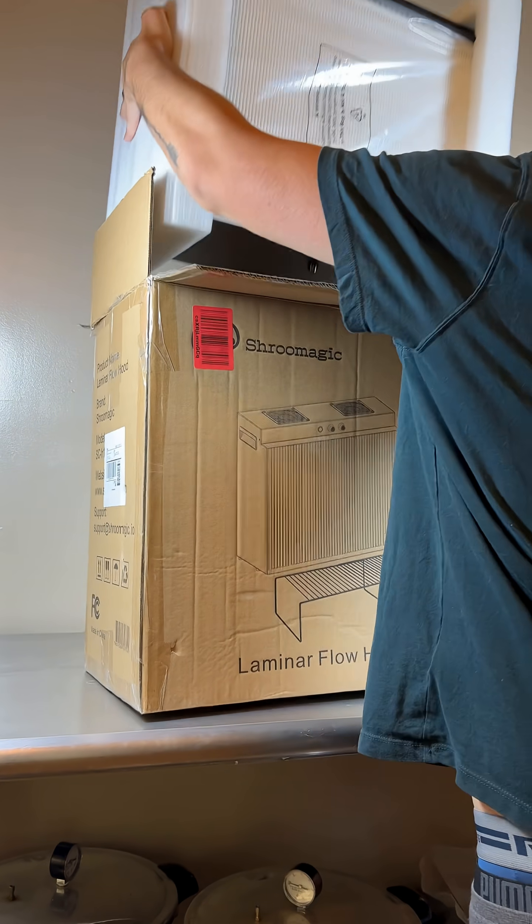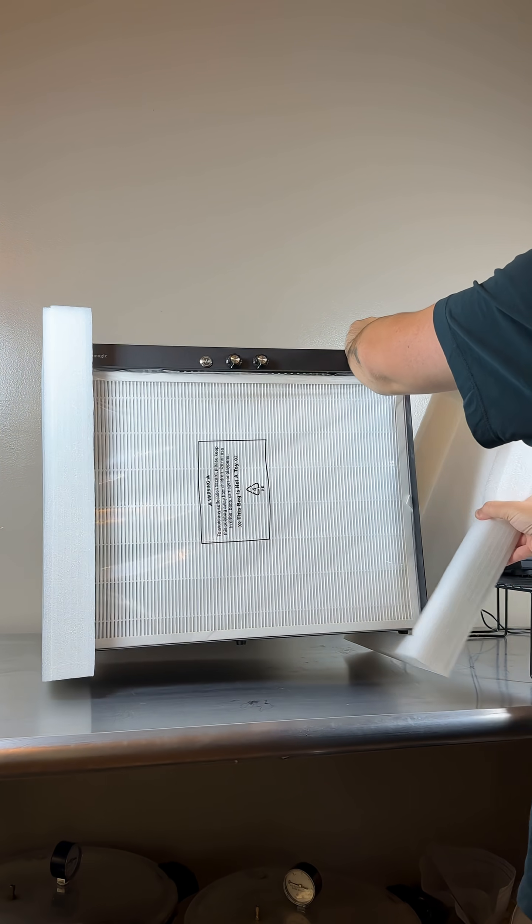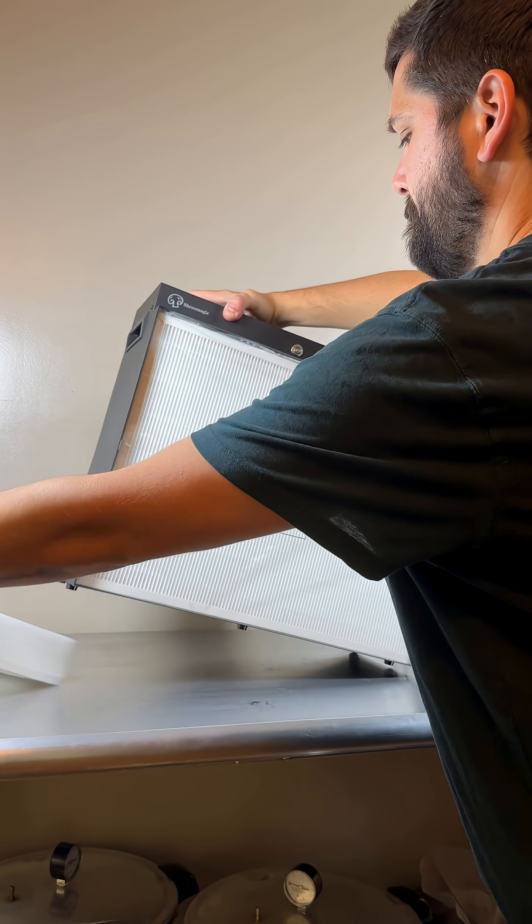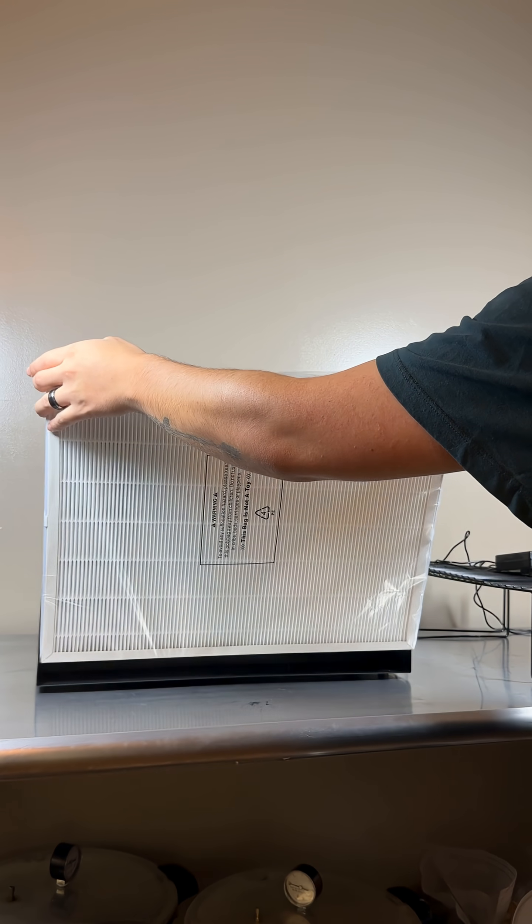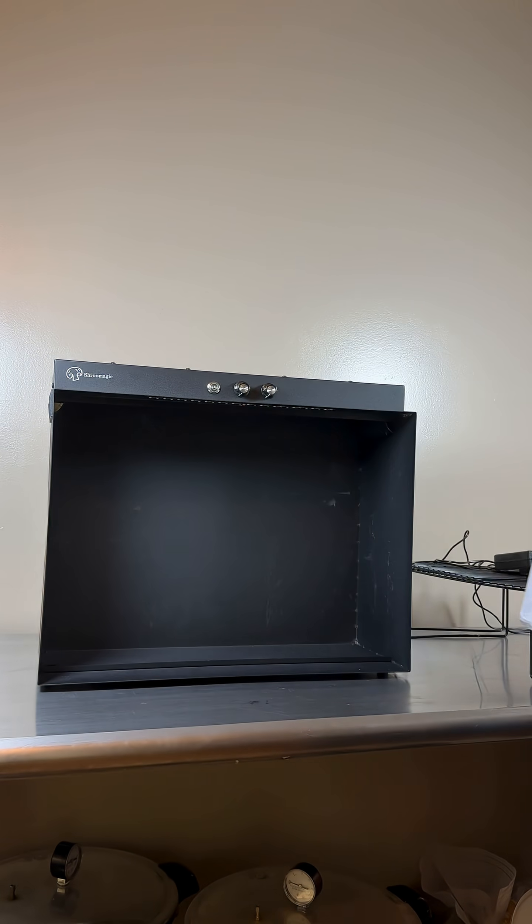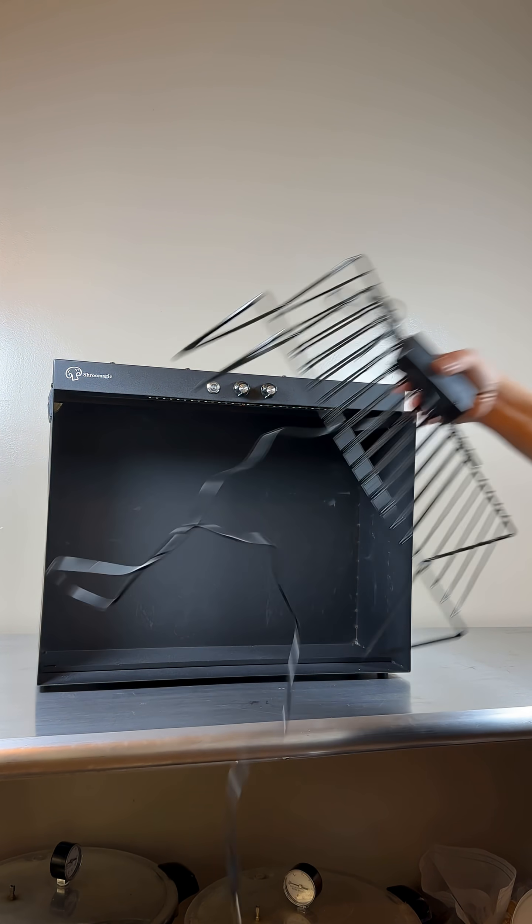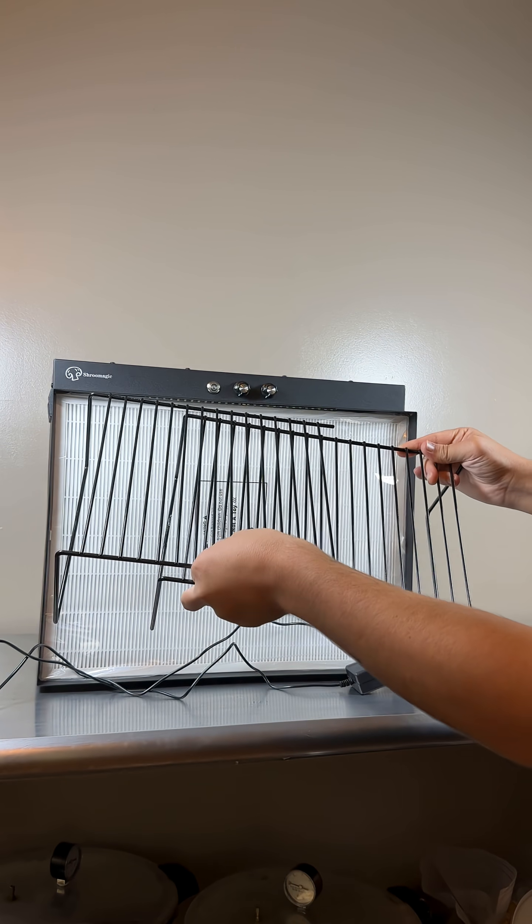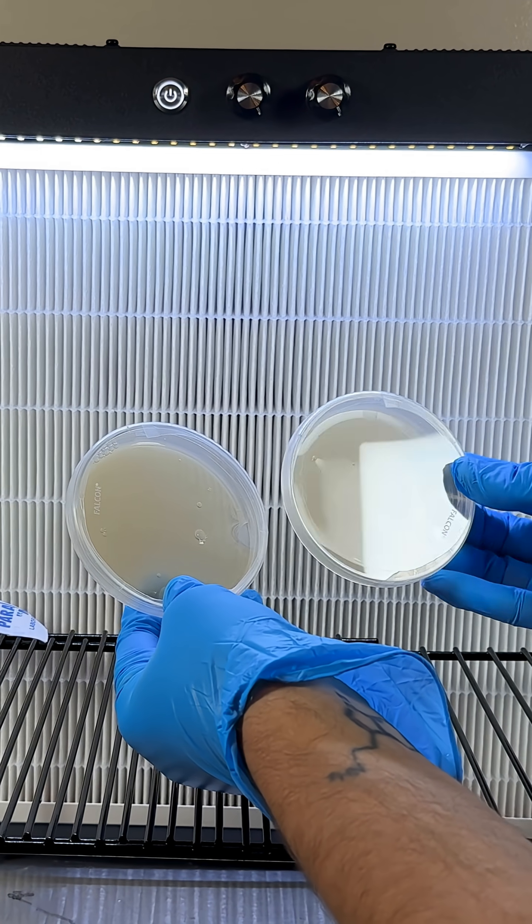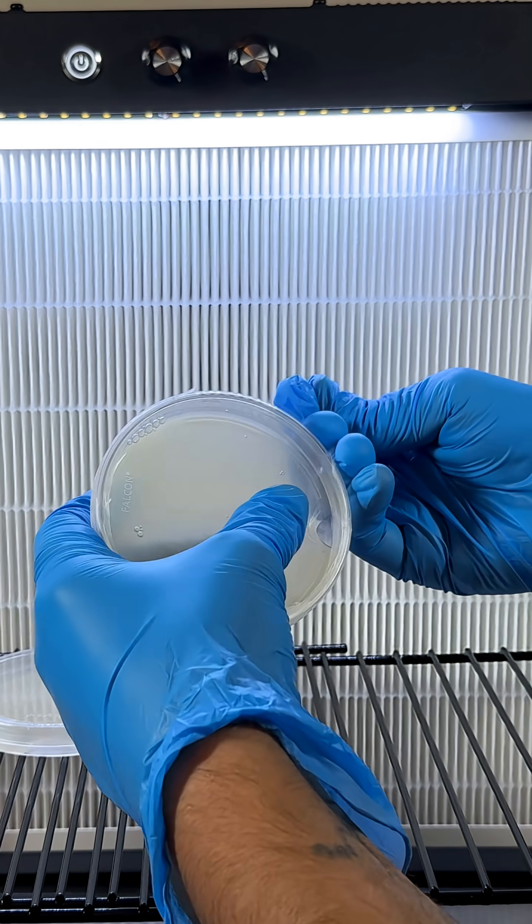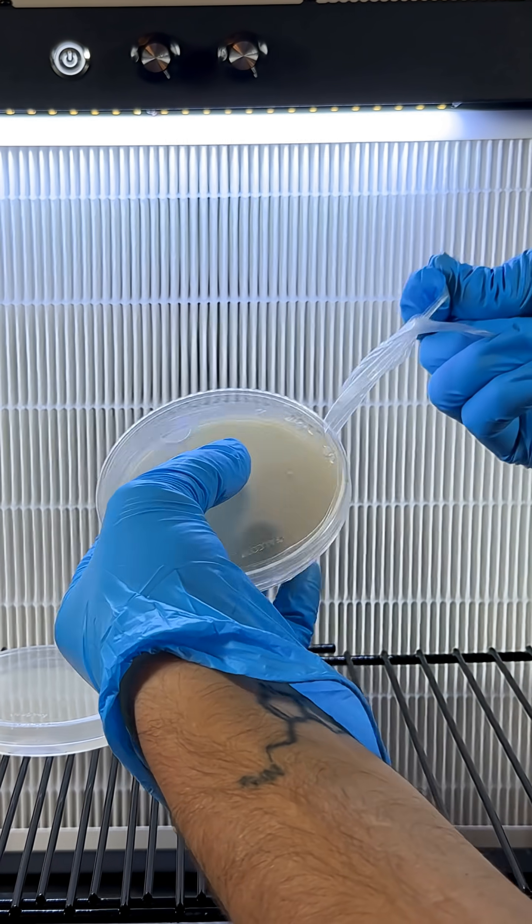This is the Shroom Magic flow hood for growing mushrooms at home. They sent me this flow hood to test and they're also sponsoring this video. It's made up of a metal enclosure with two fans at the top that blow air through a 20 by 15 inch H13 HEPA filter, which creates a clean workspace and protects your cultures from contamination.